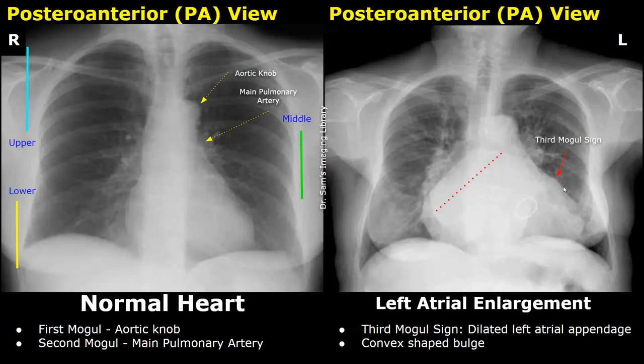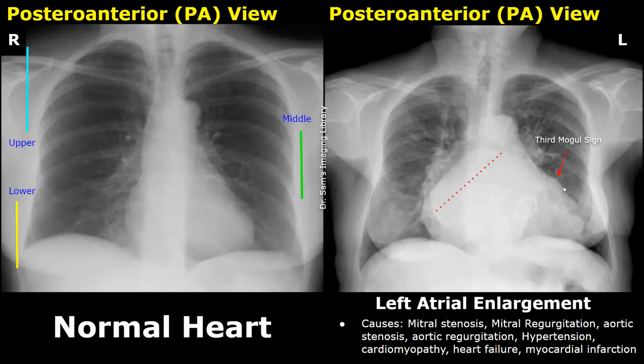Causes of left atrial enlargement include mitral stenosis, mitral regurgitation, aortic stenosis, aortic regurgitation, hypertension, cardiomyopathy, heart failure, and myocardial infarction.